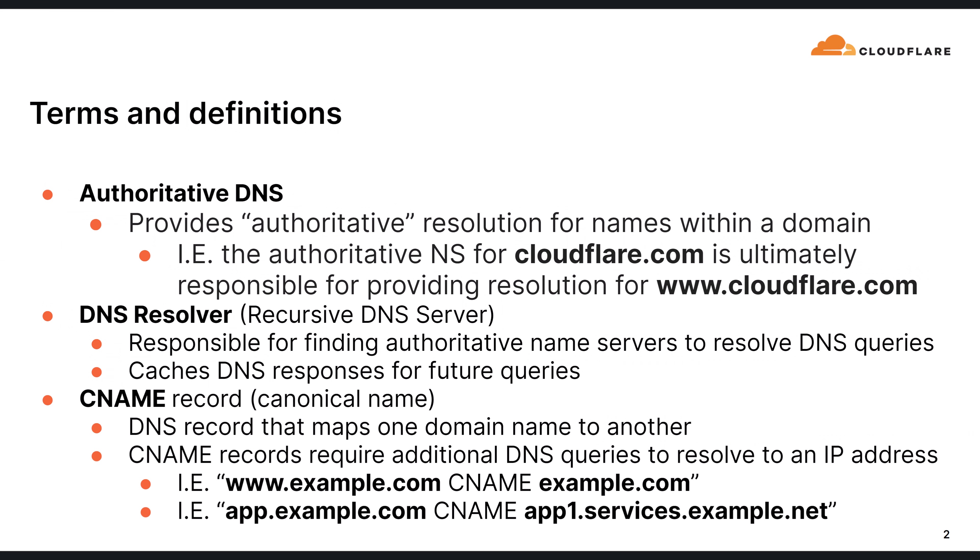Before we get started, there are a few terms you need to know. The first is authoritative DNS. Authoritative DNS should be considered the source of truth for name resolution within a given domain, and authoritative DNS servers are responsible for hosting those records. DNS resolvers, on the other hand, are responsible for recursively querying as many name servers as necessary to resolve a DNS name to an IP address. Results are usually cached within DNS resolvers based on the TTL of the DNS record they resolve. However, when results are not in cache, DNS resolvers typically end up querying authoritative name servers.